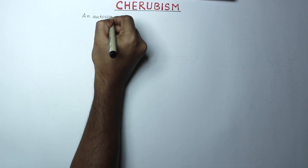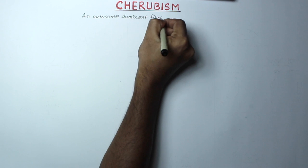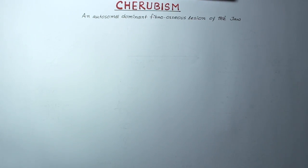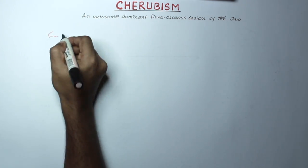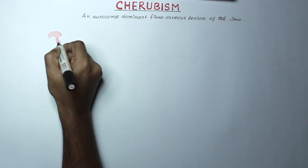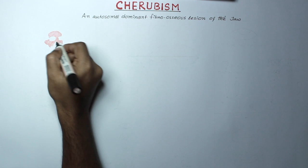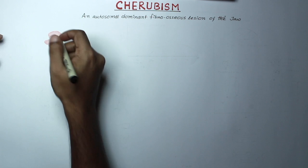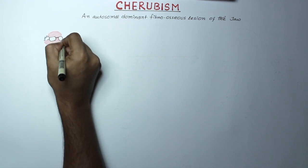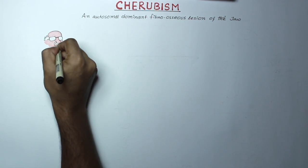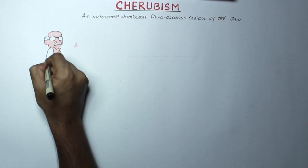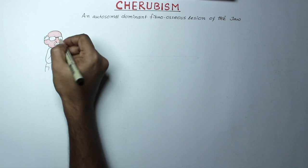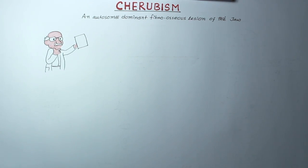Cherubism is an autosomal dominant benign fibrosis lesion which causes progressive, painless, symmetrical expansion of the jaws. It was first reported in 1933 by Jones, who described a family in which three of five siblings were affected by bilateral cystic jaw lesions associated with fullness of the cheeks, cervical lymphadenopathy, and an upward cast of the eyes with exposure of the rim of the lower sclera.